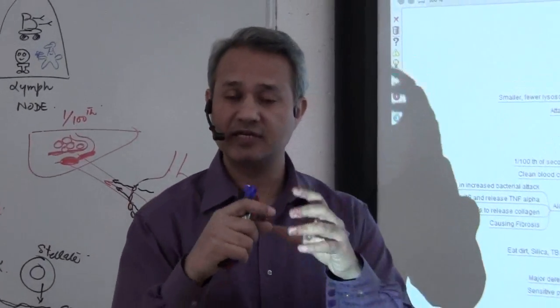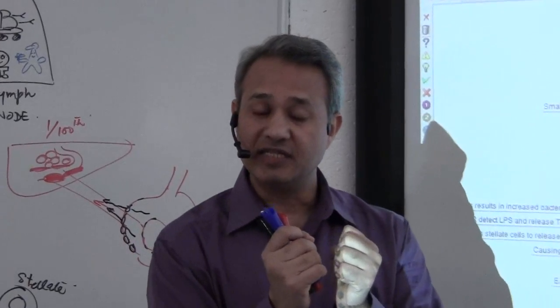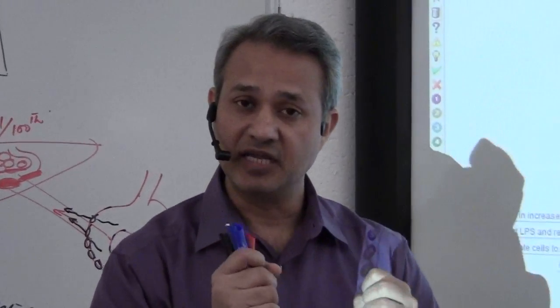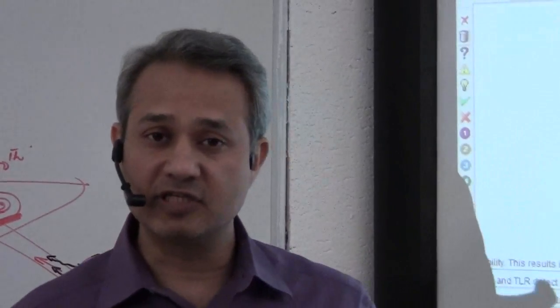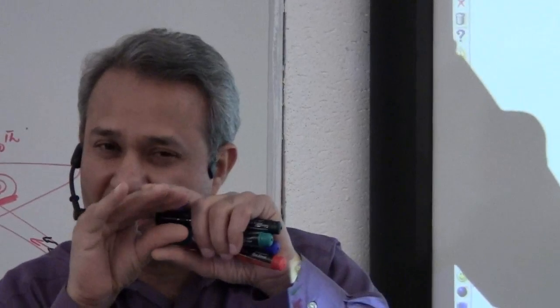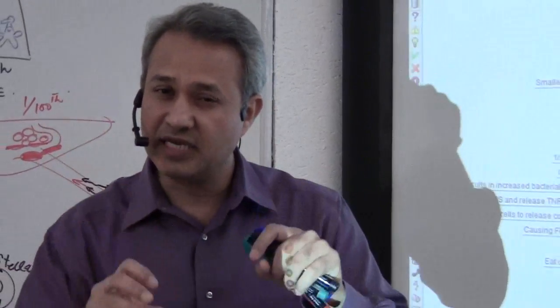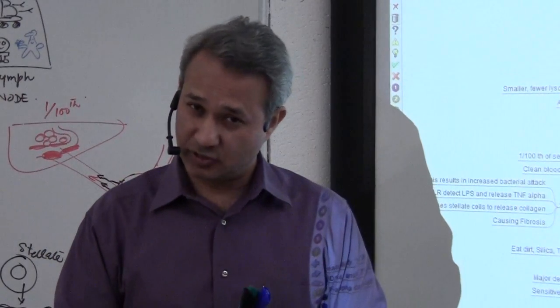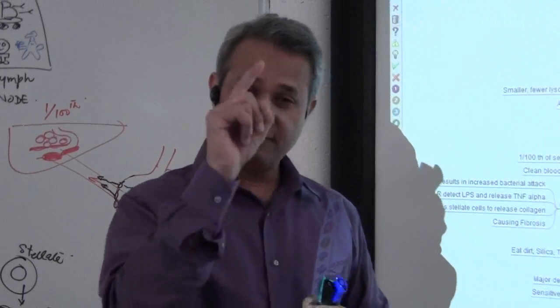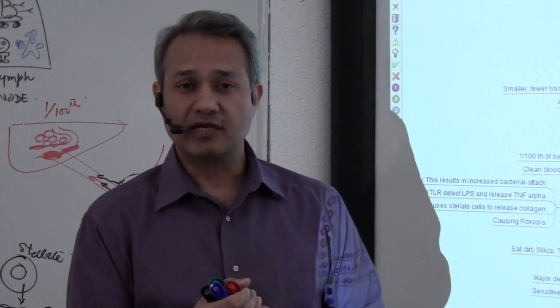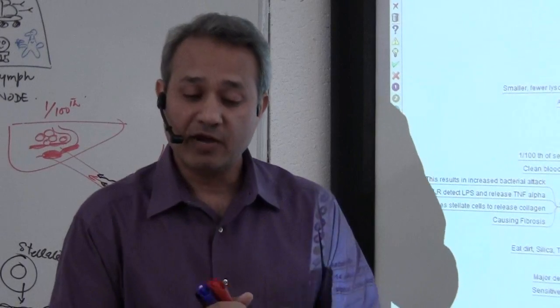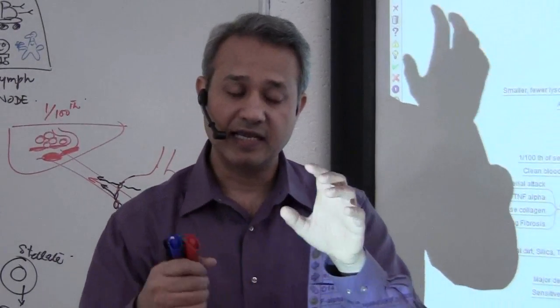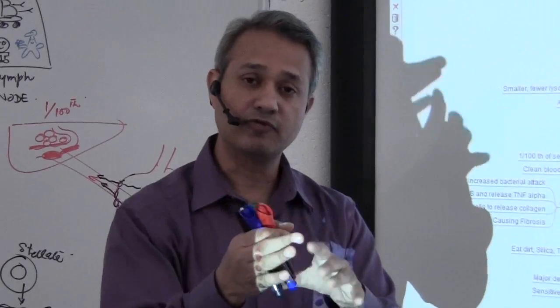The old RBCs have rigid cytoskeleton and cell membranes; they are not flexible. The function of the spleen is to let the RBCs pass through a very narrow channel. That narrow channel squeezes the RBCs. If the RBC is young and flexible it squeezes through, if it is not, it cannot squeeze through. If it cannot squeeze through, the macrophage will kill it.